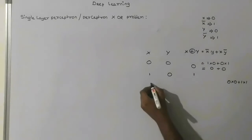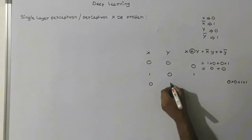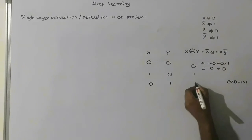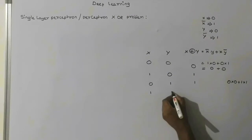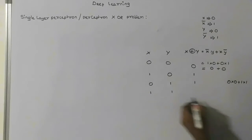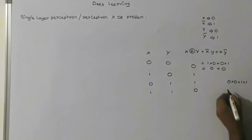Similarly, if x is 0 and y is 1, the result will be 1. And when x is 1 and y is 1, the result will be 0.